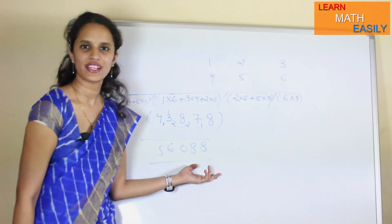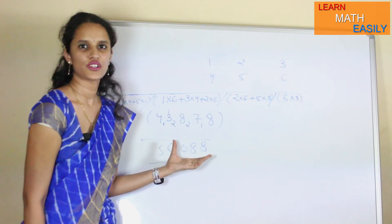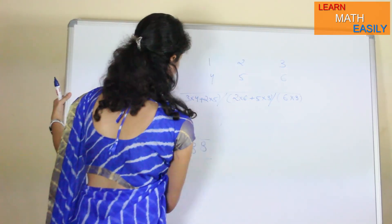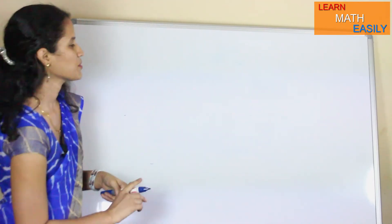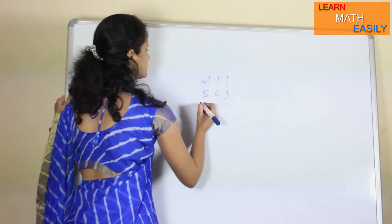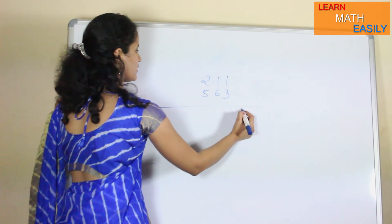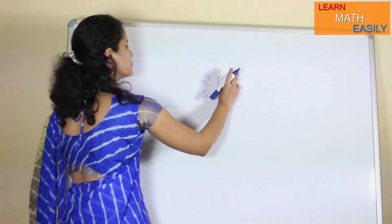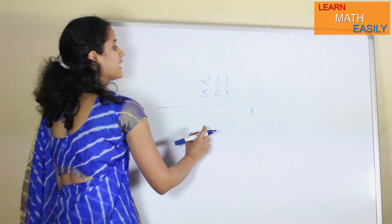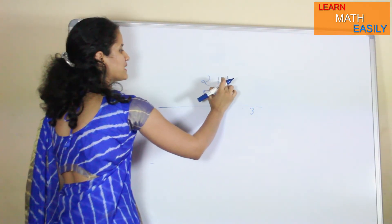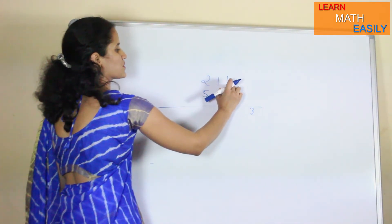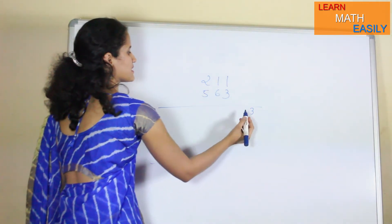I will give you one more example showing the multiplication of 3-digit numbers. Let us proceed as follows. Suppose you want to multiply 211 by 563. First of all, we multiply the right-most terms: 1 with 3, which equals 3. Then we multiply and add the first column with the second column: 1 multiplied by 3 plus 6 multiplied by 1, that is 3 plus 6, equals 9.